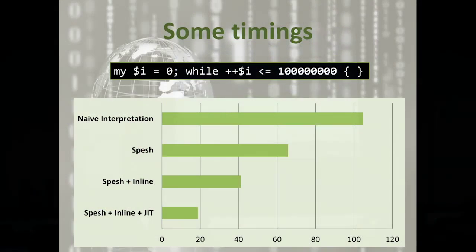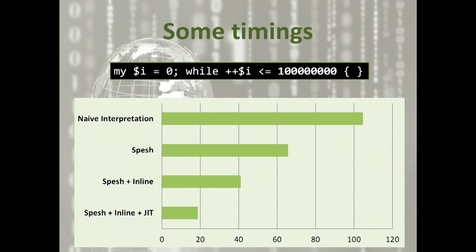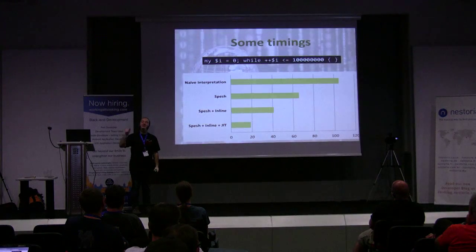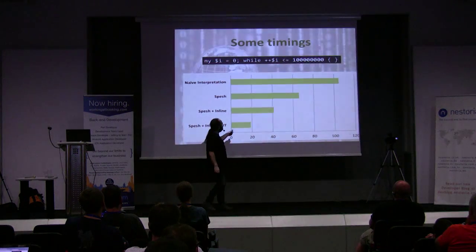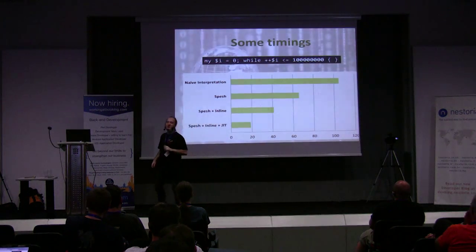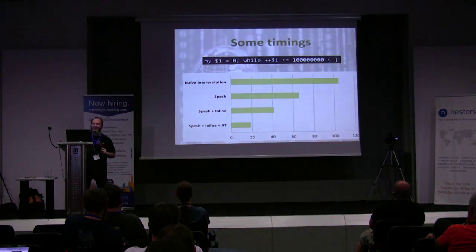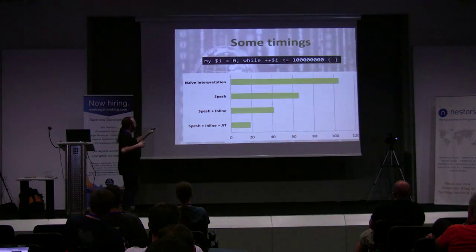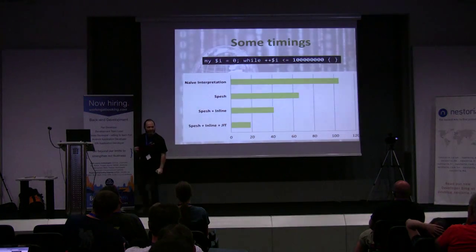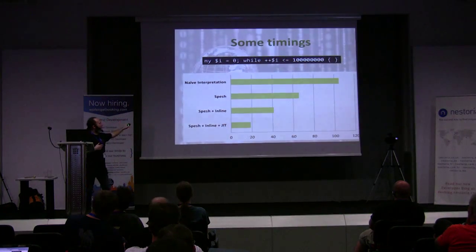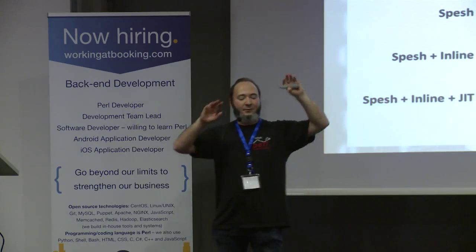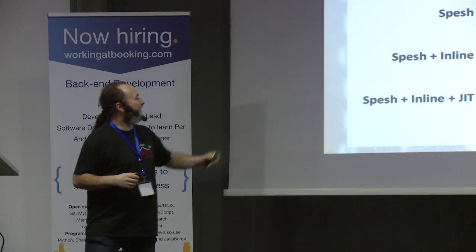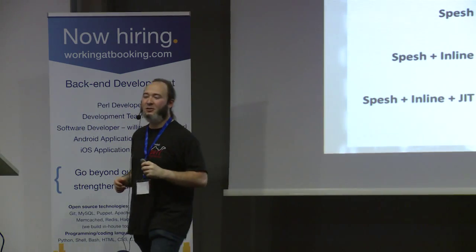How much difference does all of this make? Quite a bit. The top line is the naive interpretation, next down is with spesh, then spesh with inlining where we actually inline the operators, and the bottom one is the JIT — and you can see it's less than a fifth of the time that it used to be. We can go further than this; the code spesh is producing isn't as good as we could do yet, and I think we can do a bit better in the JIT as well. This isn't the end of the journey, but it's a significant chunk along the way.